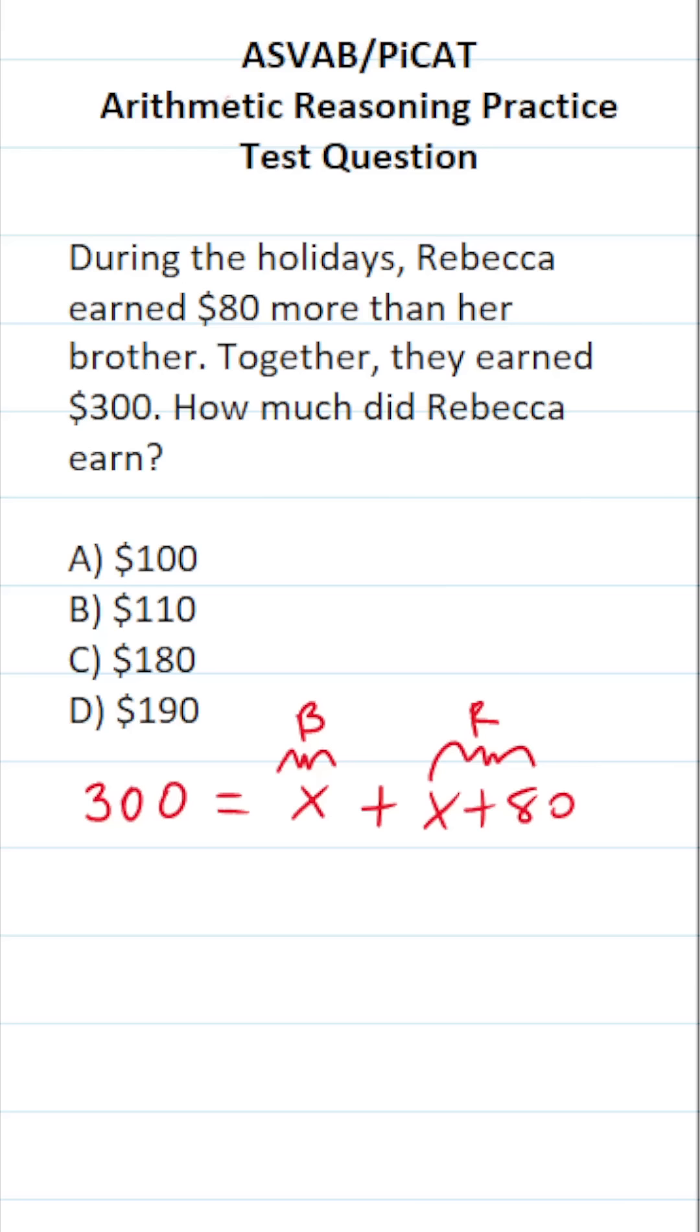Now that we've translated the statements into an equation, let's go ahead and solve it. This becomes $300 equals 2X plus 80. Let's subtract 80 from both sides so we get 2X by itself. In doing so, this crosses out, leaving us with 2X over here. 300 minus 80 is going to be 220.